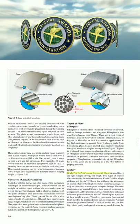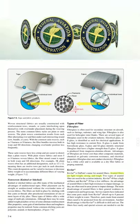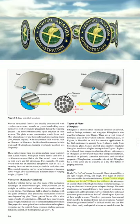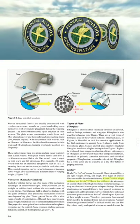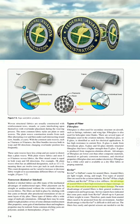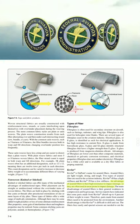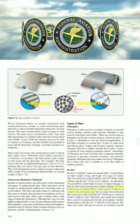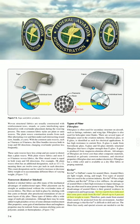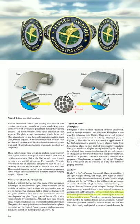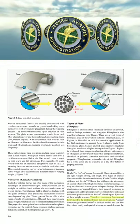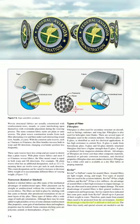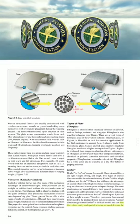Kevlar® (DuPont's name for aramid fibers). Aramid fibers are lightweight, strong, and tough. Two types are used in aviation: Kevlar® 49 has high stiffness and Kevlar® 29 has low stiffness. An advantage of aramid fibers is their high resistance to impact damage, so they are often used in areas prone to impact. The main disadvantages are general weakness in compression and moisture absorption — service reports indicate some parts absorb up to 8% of their weight in water. Parts made from aramid fibers need to be protected from the environment. Kevlar® is also difficult to drill and cut, as fibers fuzz easily and special scissors are required.